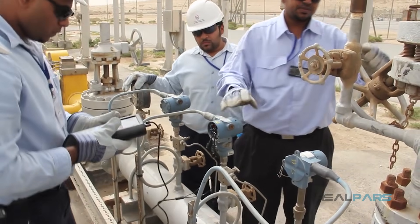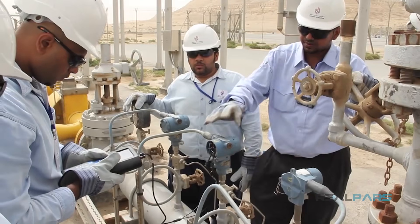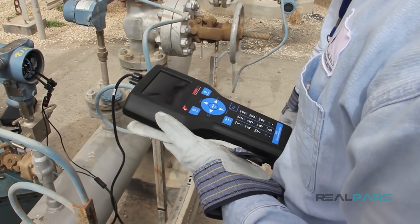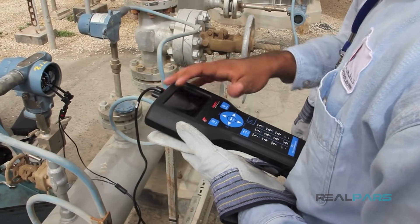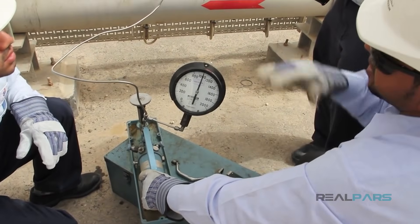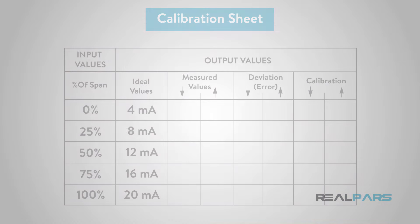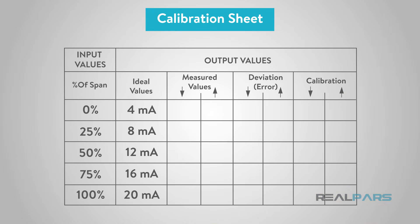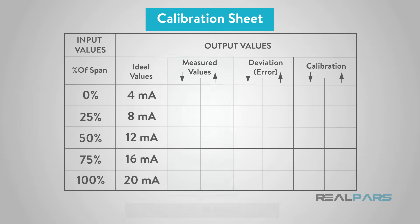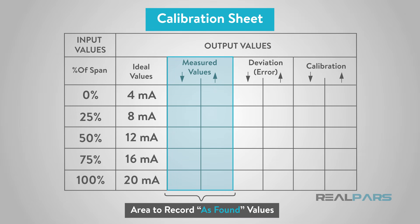Most modern process plants have sensor calibration programs, which require instruments to be calibrated periodically. Calibration can take a considerable period of time, especially if the device is hard to reach or requires special tools. In order to minimize the amount of time that it takes to perform a sensor calibration, I would first do an as-found check on the instrument. This is simply performing a calibration prior to making any adjustments. If the current instrument calibration is found to be within the stated tolerance for the device, then recalibration is not required.